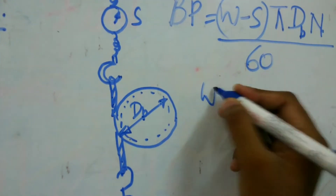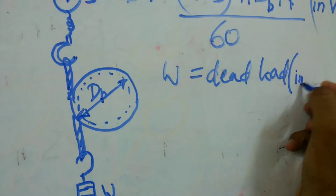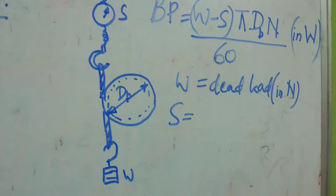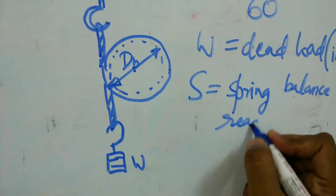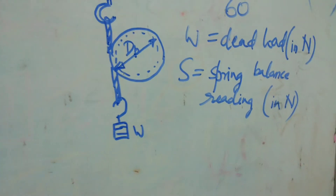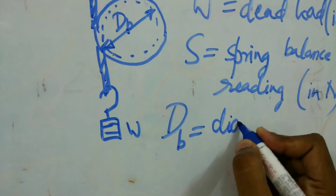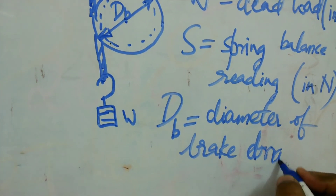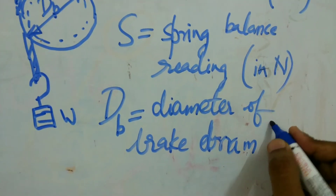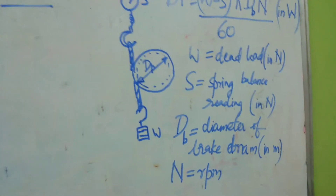In this formula, W is the dead load in Newtons, S is the spring balance reading in Newtons, DB is the diameter of the brake drum in meters, and capital N is the RPM.